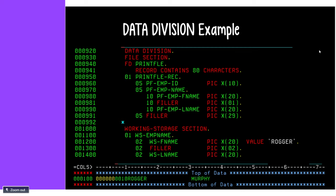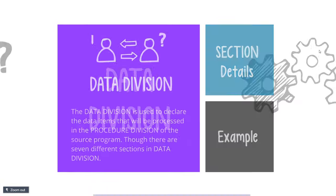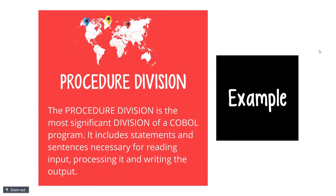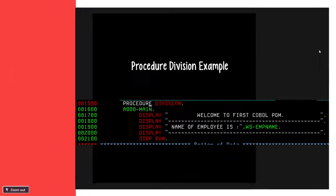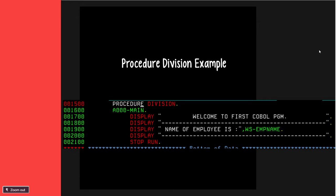Procedure division is the last section and includes the entire logic of your program — all your statements, paragraphs, and sections reside here. Looking at the example of procedure division, you have a paragraph called A000-main. This is the main paragraph which contains the logic for printing an employee name to the spool or output.